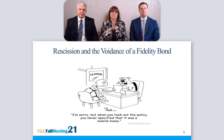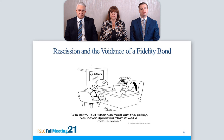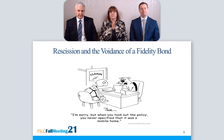Our last topic is rescission, or the avoidance of a fidelity bond. Rescission is one of the most powerful tools in the insurer's armory — a very necessary and powerful weapon to prevent paying an unjust claim. But make no mistake, rescission is a drastic remedy; our panel has called it the nuclear option. Because if rescission is successful, the policy is void ab initio, meaning from the beginning — as if the policy never existed. The insurance transaction is completely unwound.